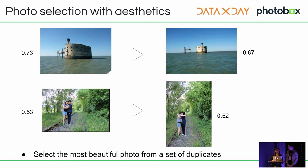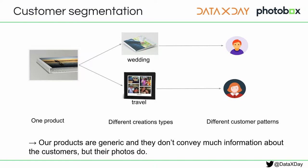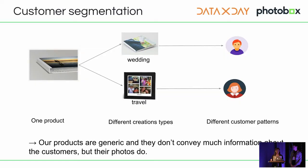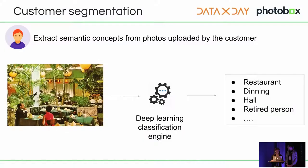Another important application is customer segmentation. Our products are generic and don't offer a lot of information about customer behavior. For example, consider two users who upload a lot of photos but have different behaviors: one loves to travel and takes lots of travel pictures, the other takes pictures of their wedding. In order to propose adapted products, we need to know the content of their photos. Customer segmentation is also used to run targeted marketing campaigns on different topics.